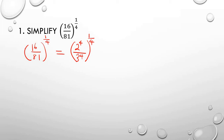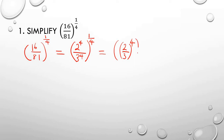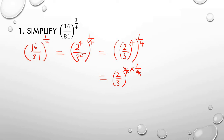Now let's simplify this bracket further by introducing another bracket: that will be 2 over 3, all raised to power 4 — so that we'll have just one index. Then we have double indices which we multiply out, so 4 multiplies the fractional index 1 over 4. These cancel out and we have 2 over 3 raised to power 1.